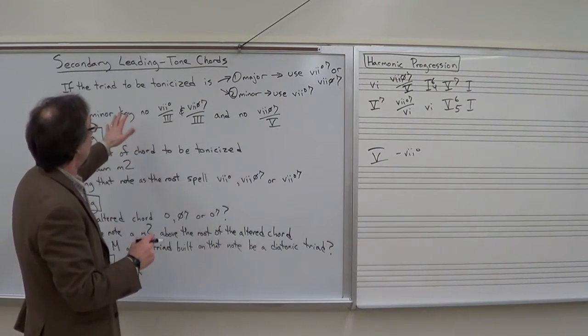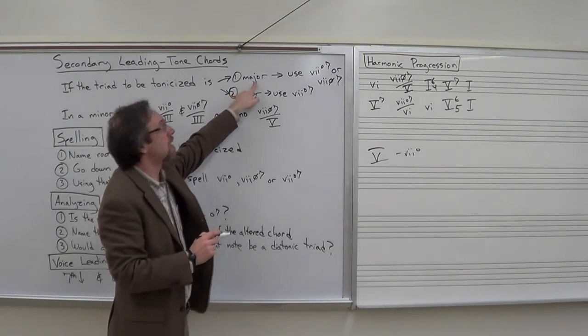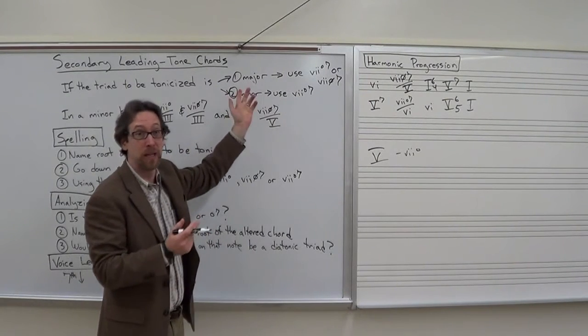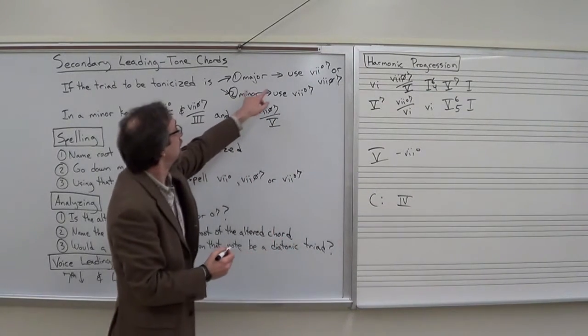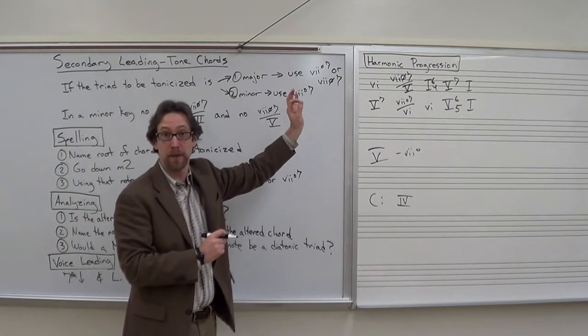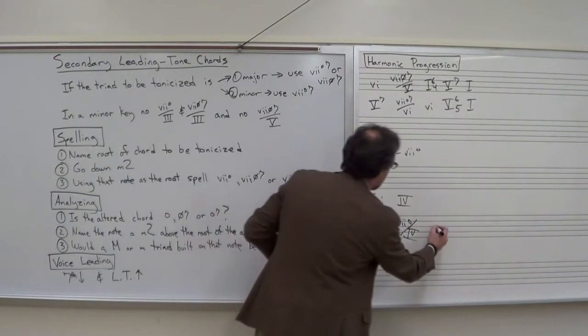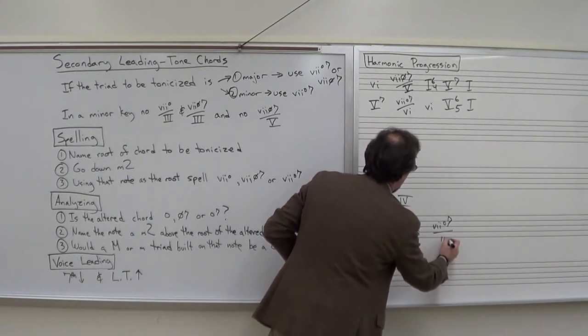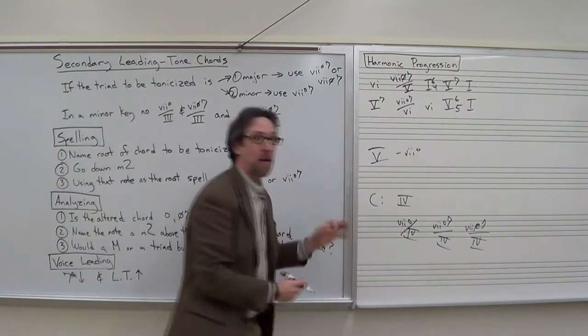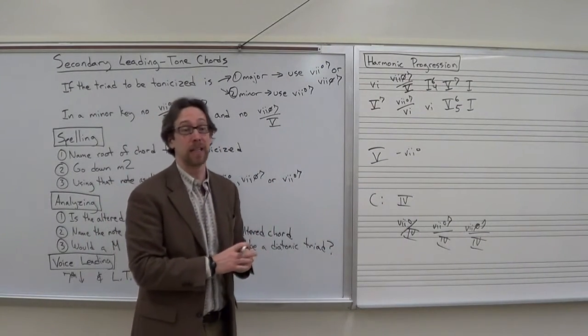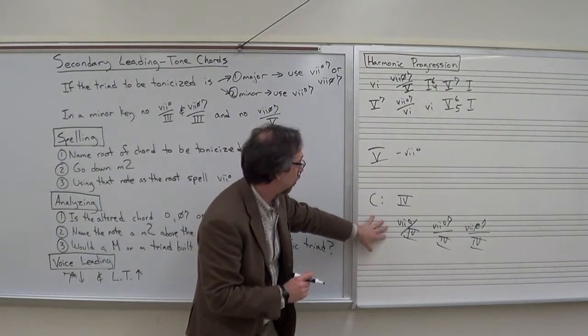There's a couple rules we're going to be aware of. If the triad to be tonicized is major, let's say in the key of C major, the 4 chord, then you can use 7 diminished triad as an option, 7 diminished 7 of 4, or 7 half diminished 7 of 4. You actually have three options on secondary leading tone functions.